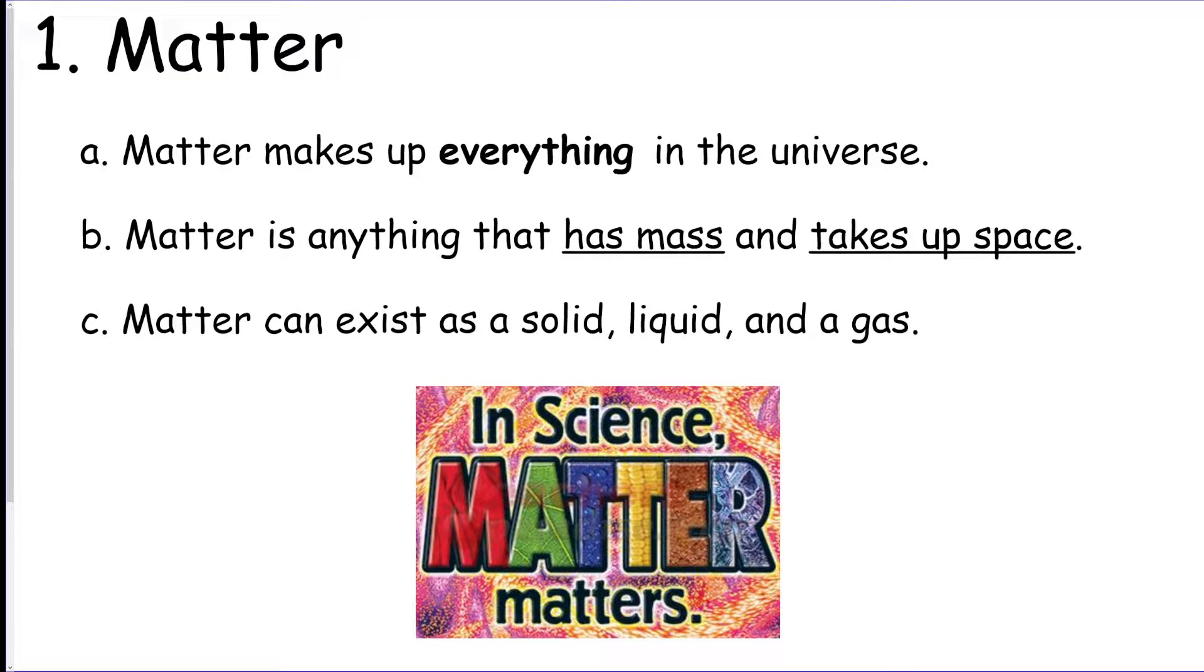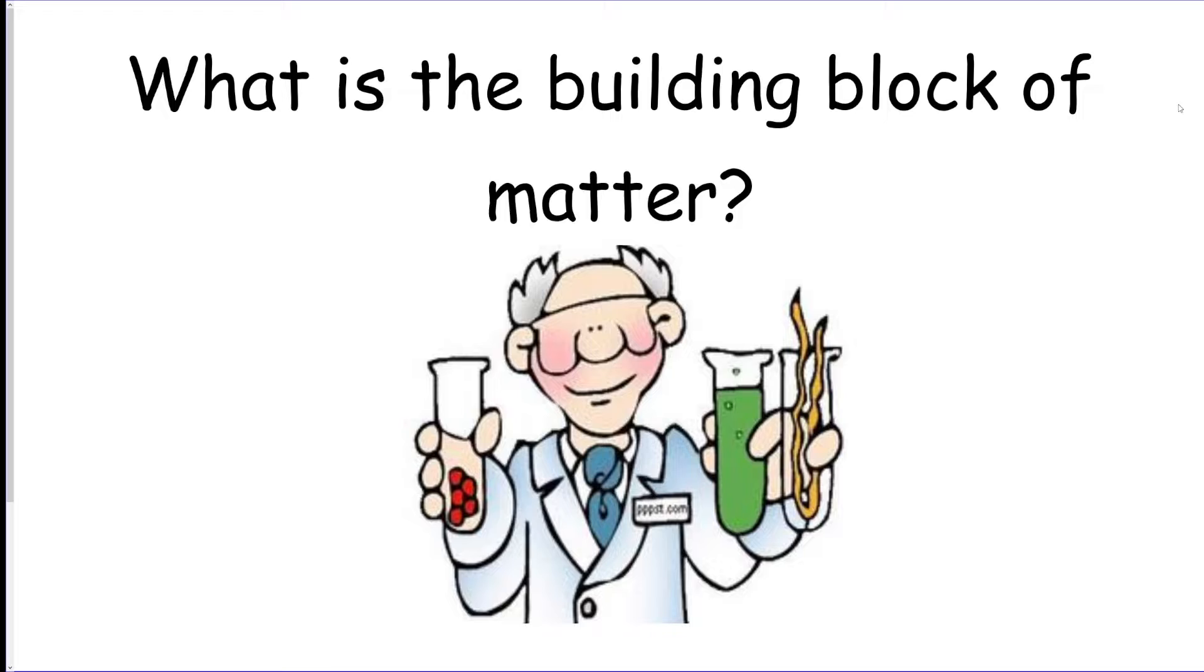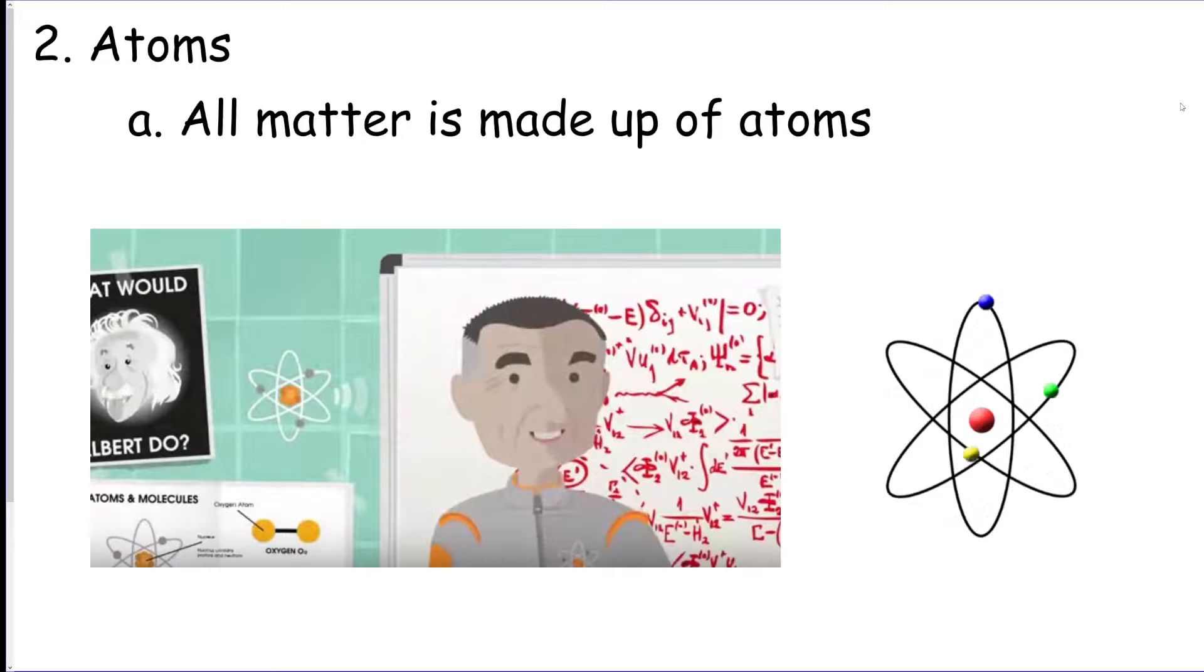We're going to start with matter. Matter makes up everything in the universe, so every object has to have mass and take up space. I bet you can't think of any object that doesn't have those two things. Matter can exist as a solid, liquid, or a gas.